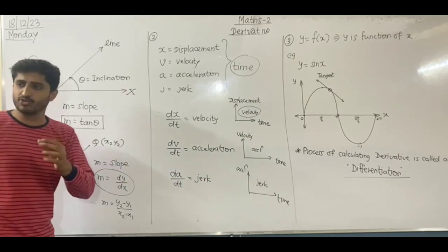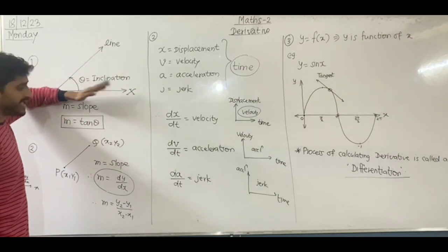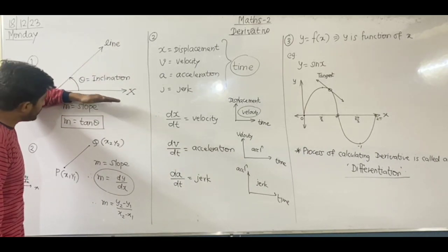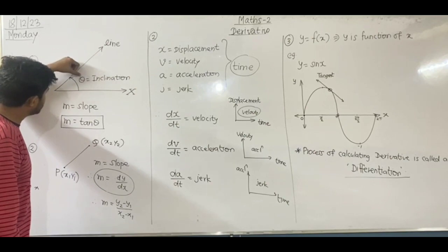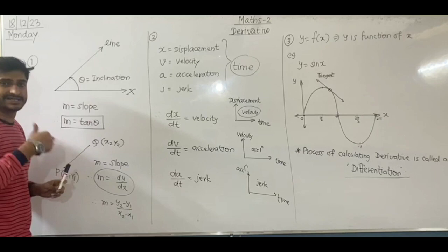I will give you a brief introduction. There is a line and the x-axis. The line makes an angle with the positive x-axis in the anti-clockwise direction. I will call this angle theta, and theta is the inclination.